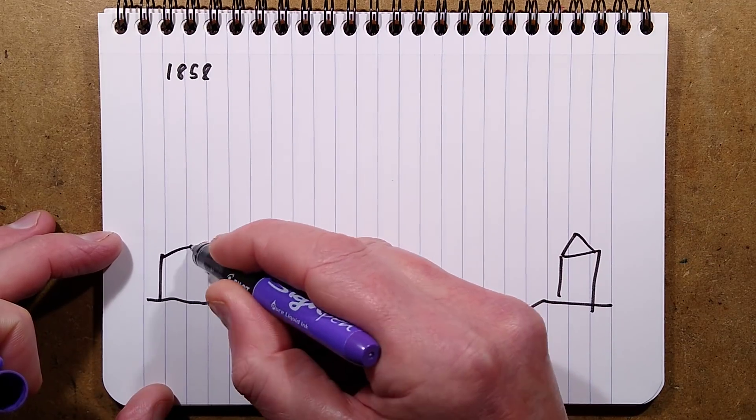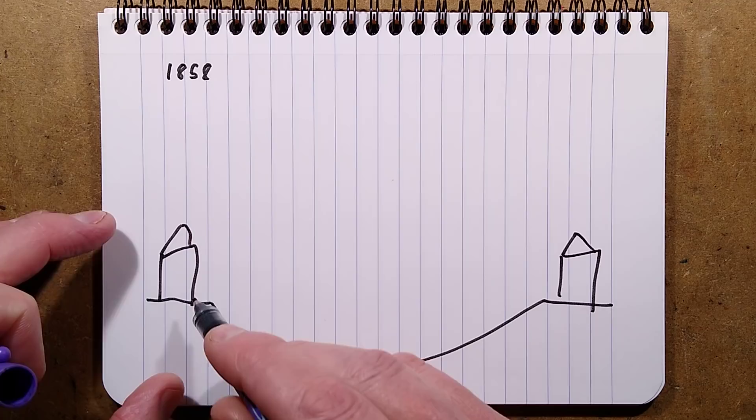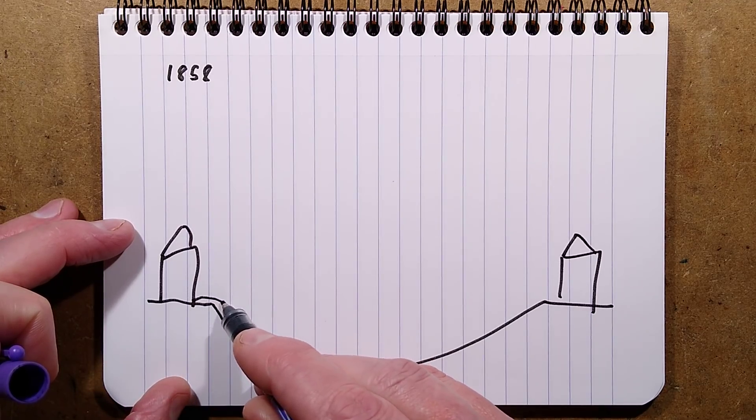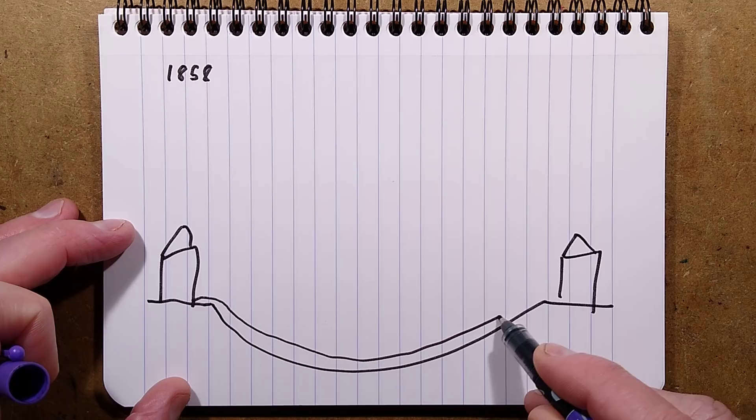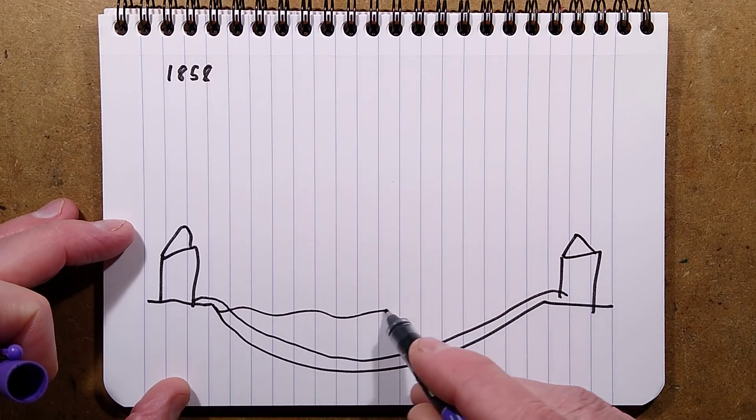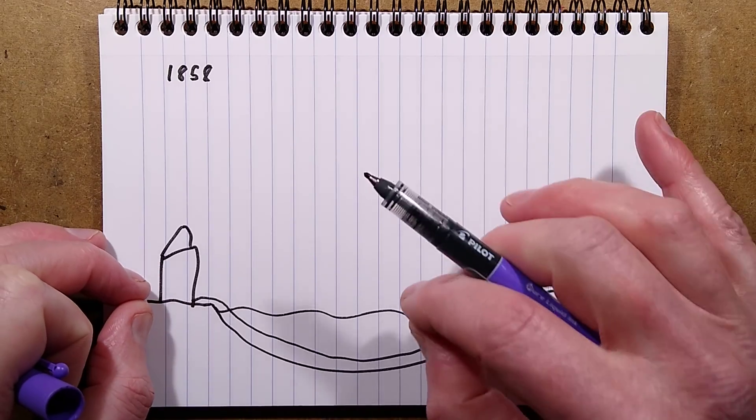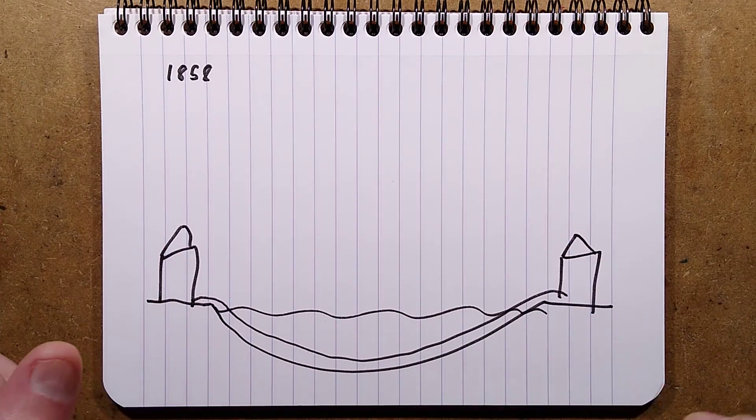And they put an armoured cable under the sea and connected them thinking they were going to be able then to connect their Morse code keys and go do-do-do-do-do-do and send data to each other.